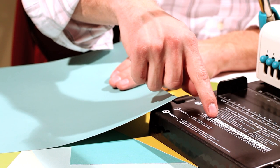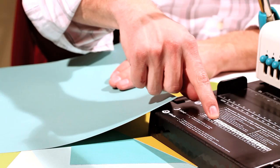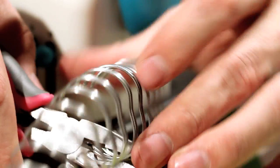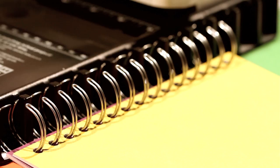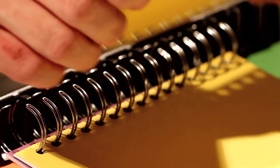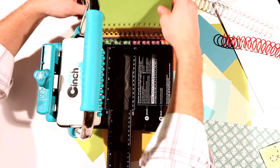The next part is binding. By looking at the instructions, you can find out how many loops you need on your binding and then use the wire cutters to clip it accordingly. The Cinch has a handy holster on the side where you can place the binding, allowing you to easily attach your pages as you make your punches.